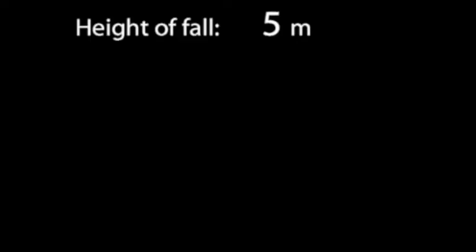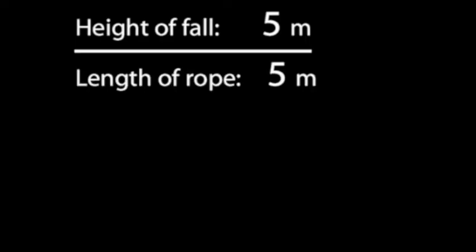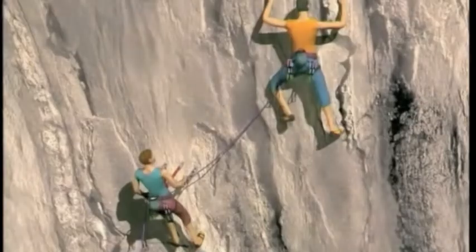The fall factor will be a 5-meter fall divided by 5 meters of rope in the system at the time of the fall — 1. This is a reasonable fall factor.